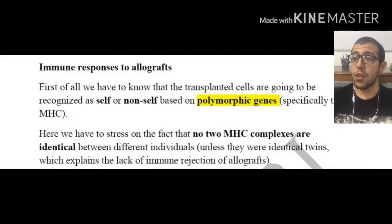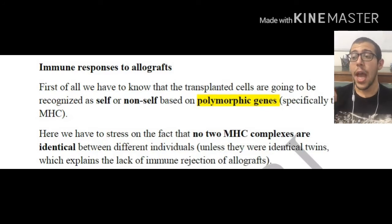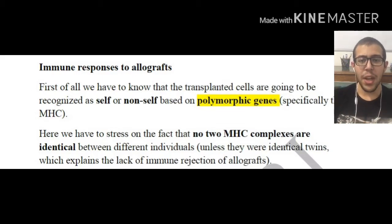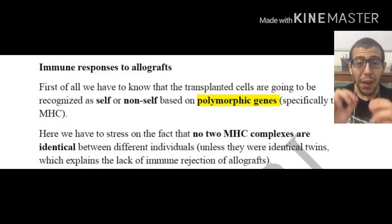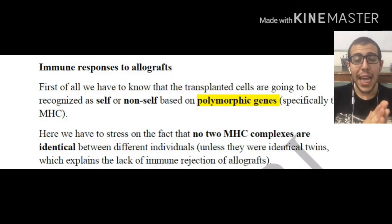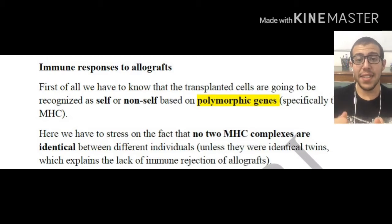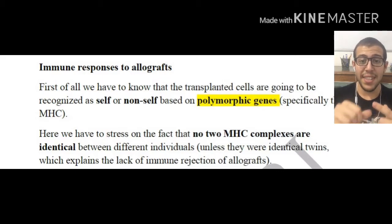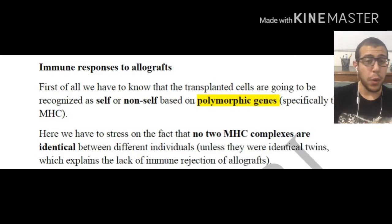The transplanted cells are going to be recognizing self or non-self cells based on polymorphic genes. These MHC complexes — or HLA, the human leukocyte antigens — are going to be very different, like fingerprints. They're completely different for every individual, and this is how our immune system reacts. If our body recognizes these fingerprints as identical to those present in our body, it will let them go. If not, it is going to elicit an immune response.